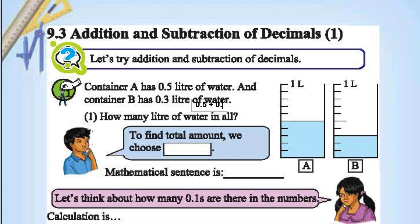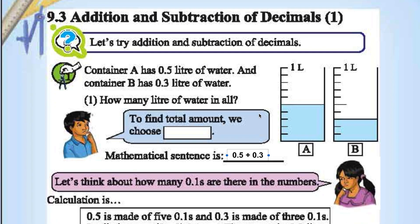we write 0.5 plus 0.3. This is the mathematical sentence: 0.5 plus 0.3 equals 0.8.